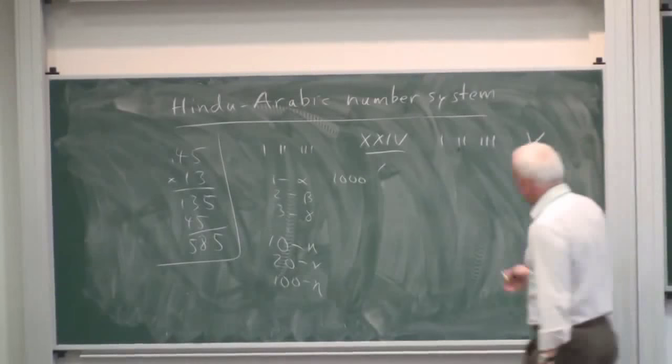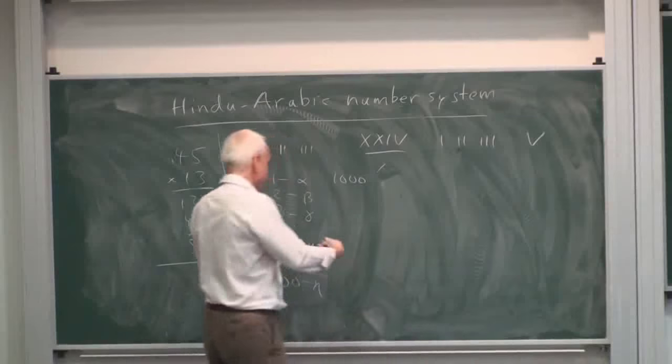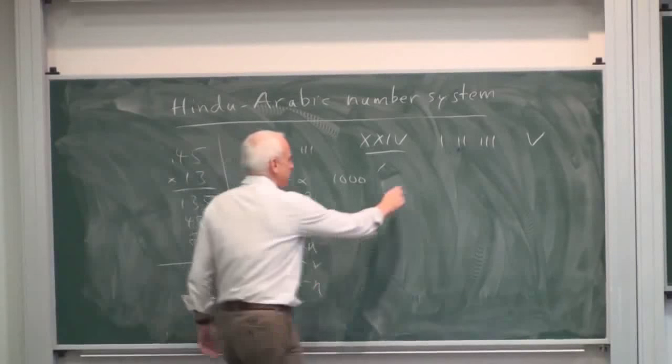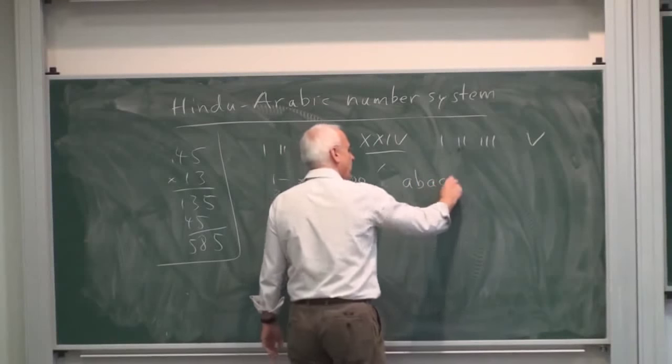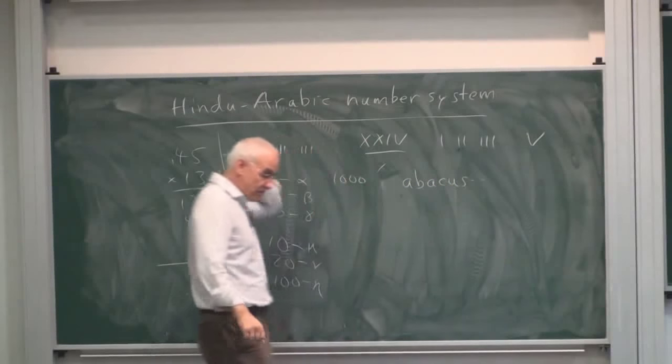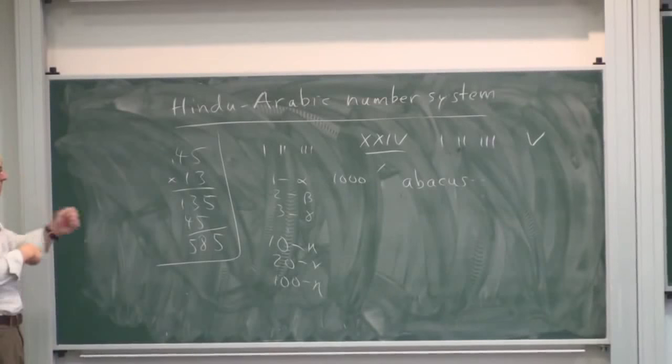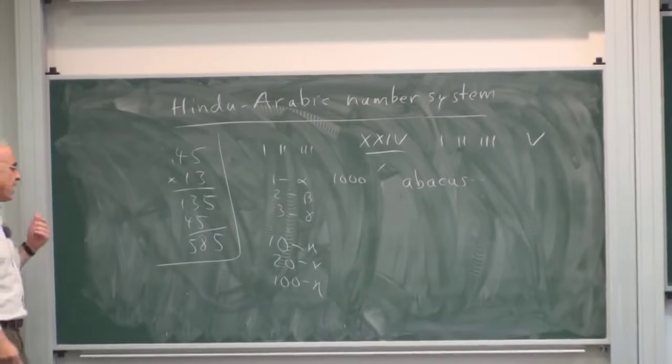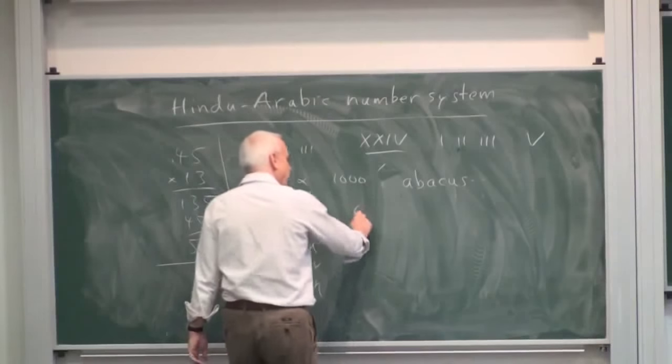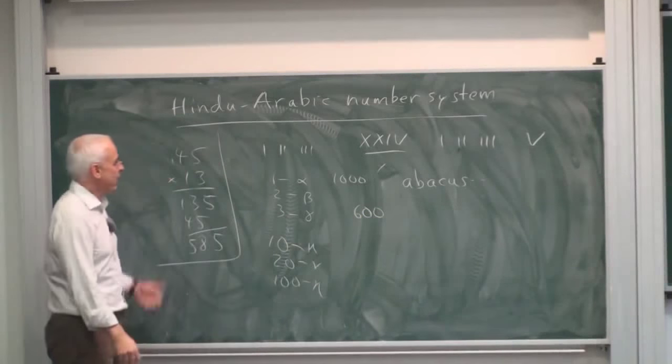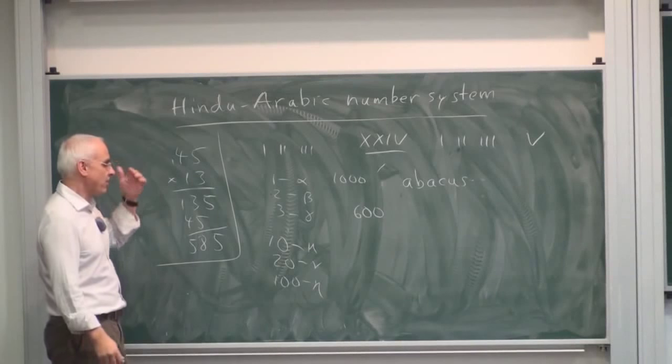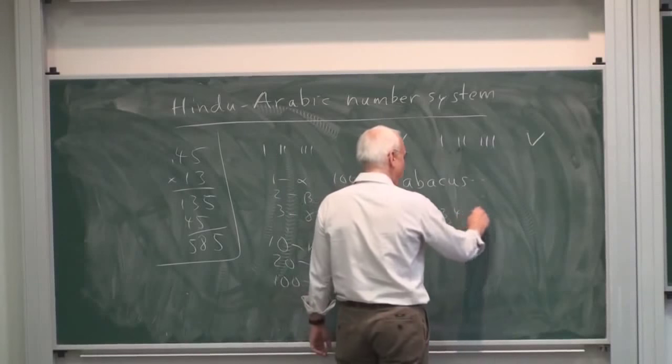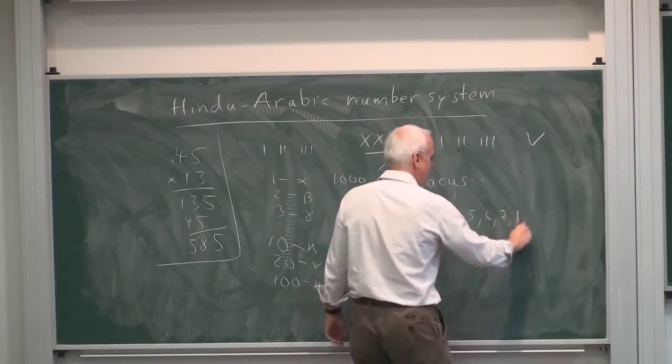The Chinese also had a system. They had counting boards or counting tablets, abacus eventually. It was an important tool for doing computation. And no doubt there might have been some connection between the Chinese and the Indians. But in any case, around the year 600, we don't know exactly when, the Hindus developed this system where they used the numbers 1, 2, 3, 4, 5, 6, 7, 8, and 9.